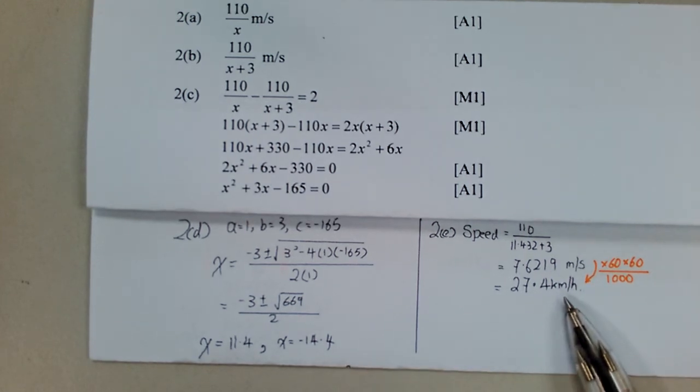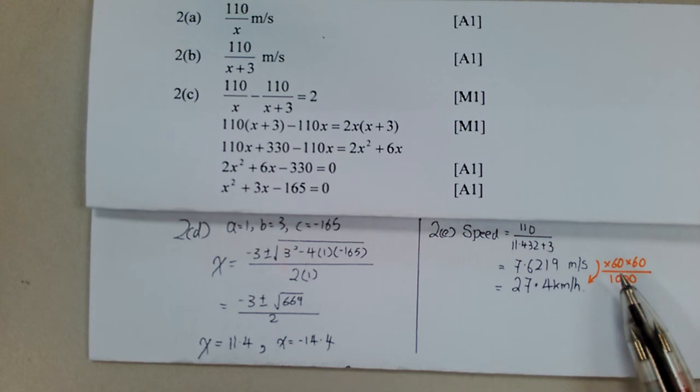This is something that's already learned in lower secondary. So multiply by 60 by 60 divided by a thousand, you get 27.4 kilometers per hour. And that concludes question two. Thank you.